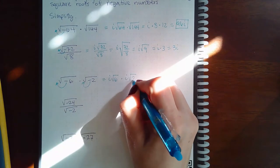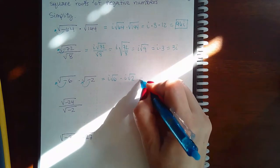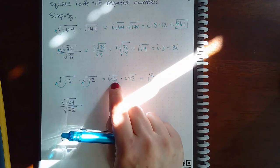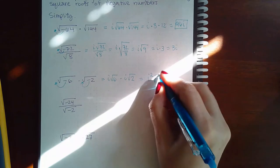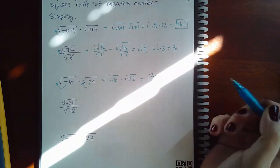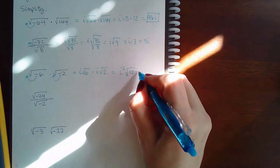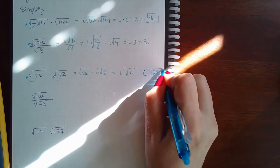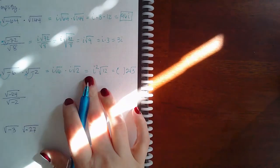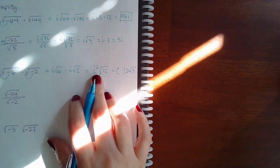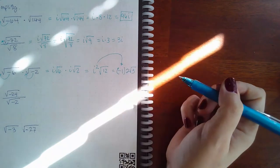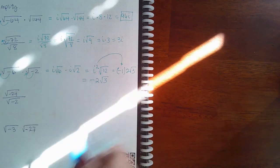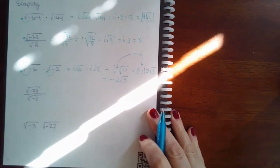Now I can take i times i to get i², and I can multiply the real-number square roots together to get 12 times √12. The √12 simplifies to 2√3, and I² equals negative 1. So this becomes negative 1 times 2√3, giving a final answer of negative 2√3.